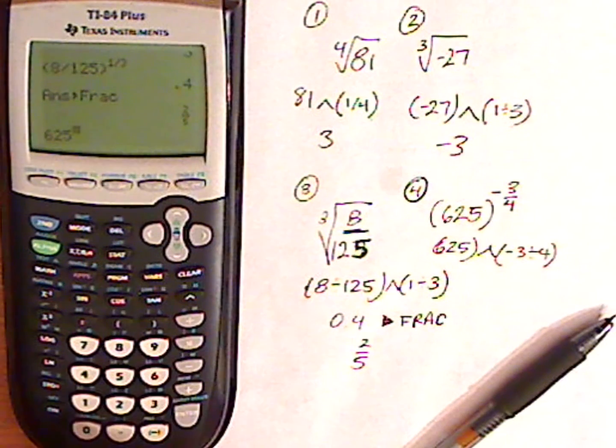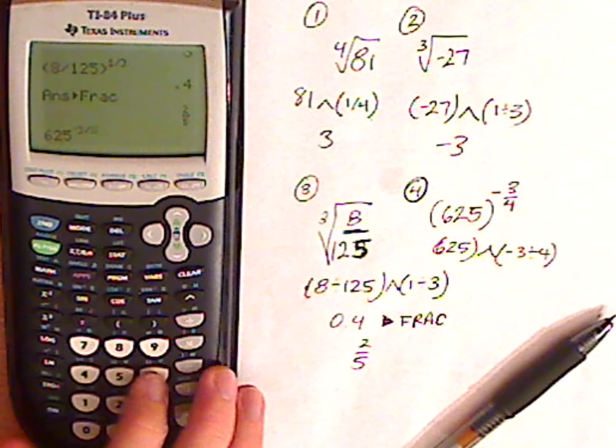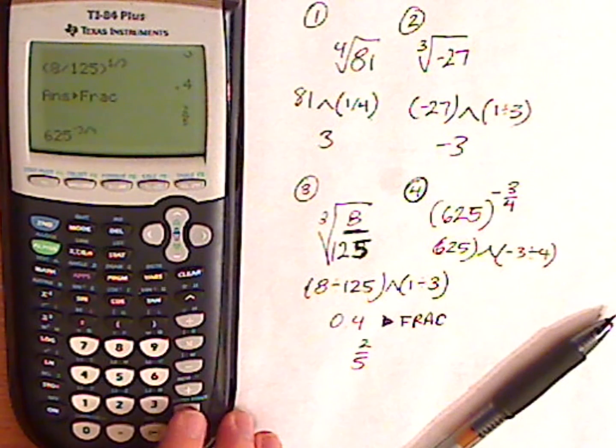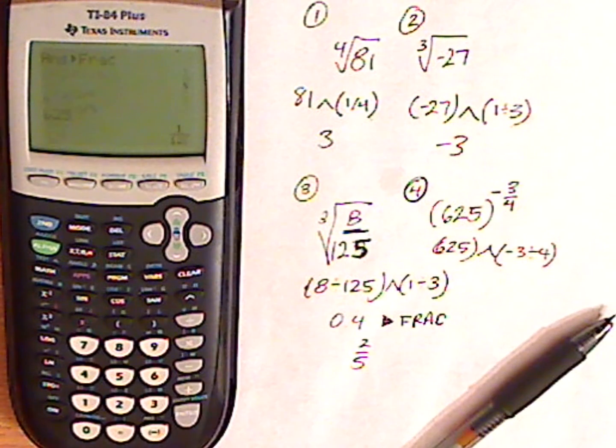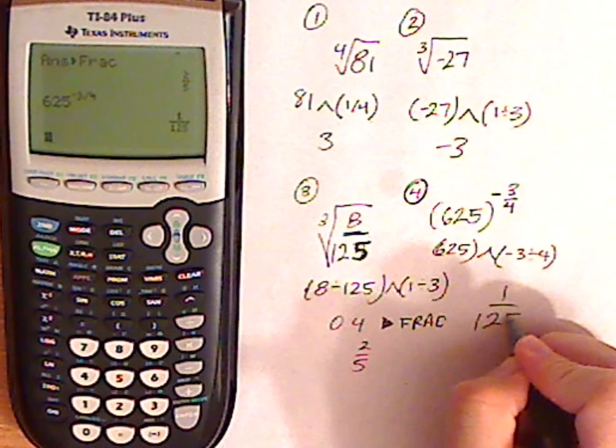A little carat thing. So it goes up. Then I have negative 3 divided by 4. Type that in. And it gives me 1 over 125.